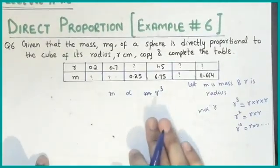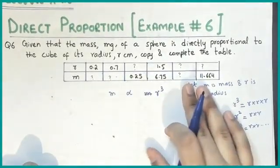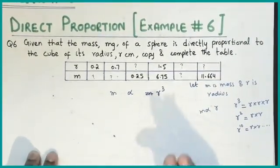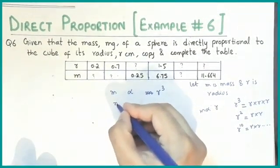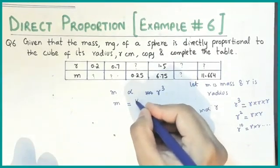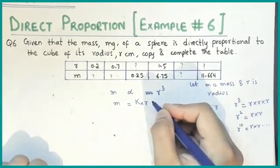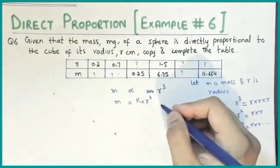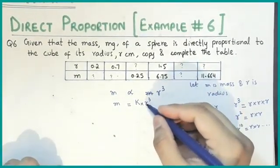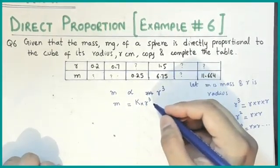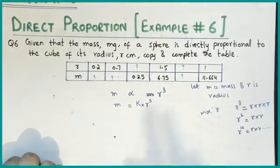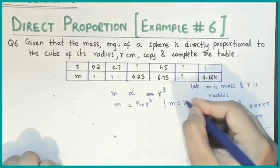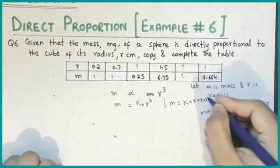Now we have to make a general equation. We need to copy and complete the table. We always find the general equation first. The equation involves m and r cubed. Many students, when they solve the question, forget the cube and only use r. So to avoid that mistake, you can write it as m equals k times r times r times r, so you will never forget to use a single r.